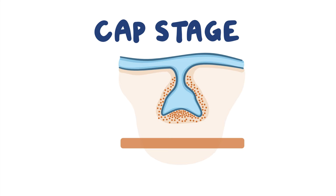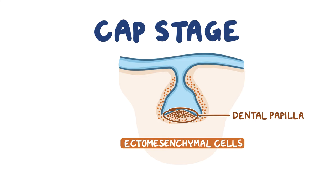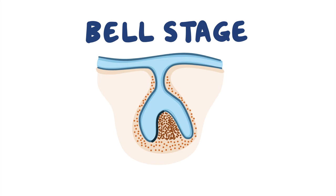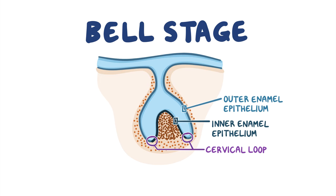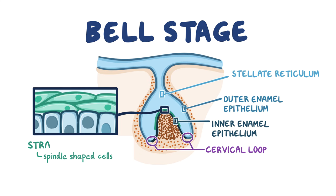The ectomesenchymal cells surrounding the enamel organ continue to accumulate, especially near the invagination of the cap. The dense condensation beneath the cap is called the dental papilla, whereas the accumulation encircling both the dental papilla and enamel organ is known as the dental sac or dental follicle. As the enamel organ continues to grow, the invagination deepens, forming the cervical loop where the inner and outer enamel epithelium meet. Within the enamel organ, epithelial cells between the stellate reticulum and the inner enamel epithelium differentiate into spindle-shaped cells known as stratum intermedium, and the stellate reticulum begins to collapse, reducing the distance between the inner and outer enamel epithelium. The tooth germ epithelium then forms the bell-shaped structure that will become the crown of the tooth.